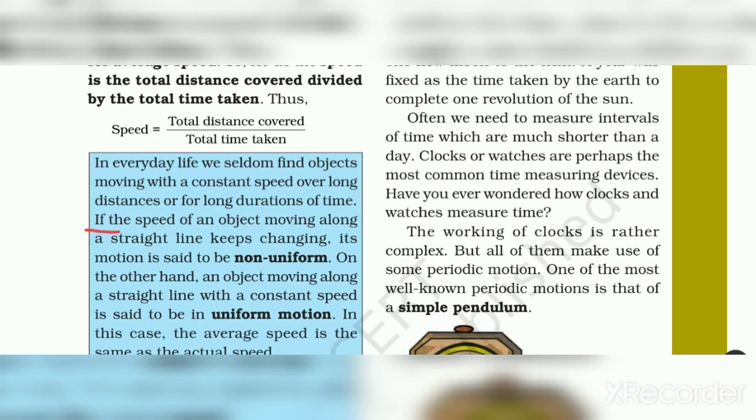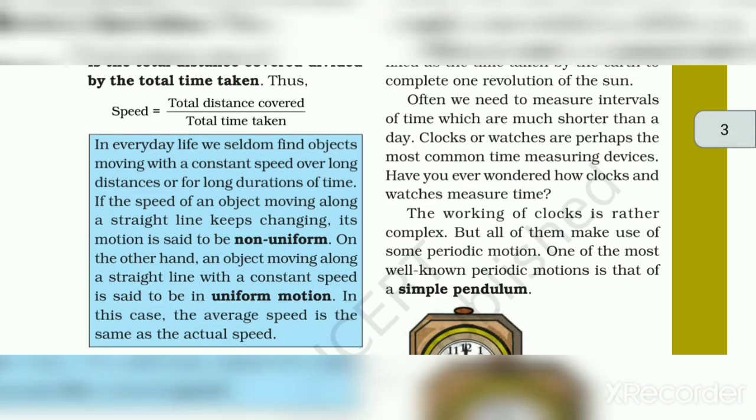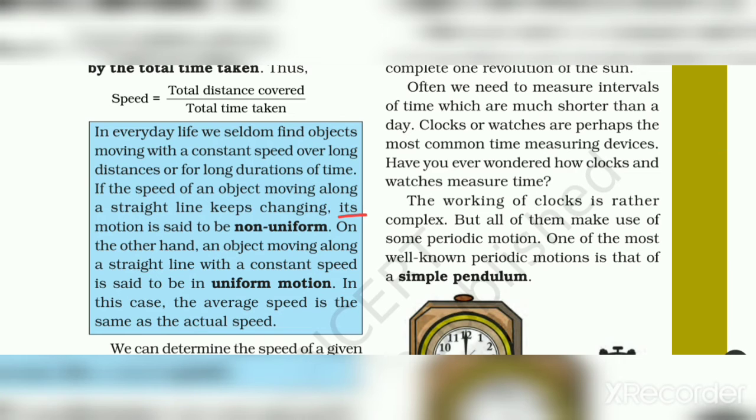If the speed of an object moving along a straight line keeps changing, its motion is said to be non-uniform. On the other hand, an object moving along a straight line with a constant speed is said to be in uniform motion.